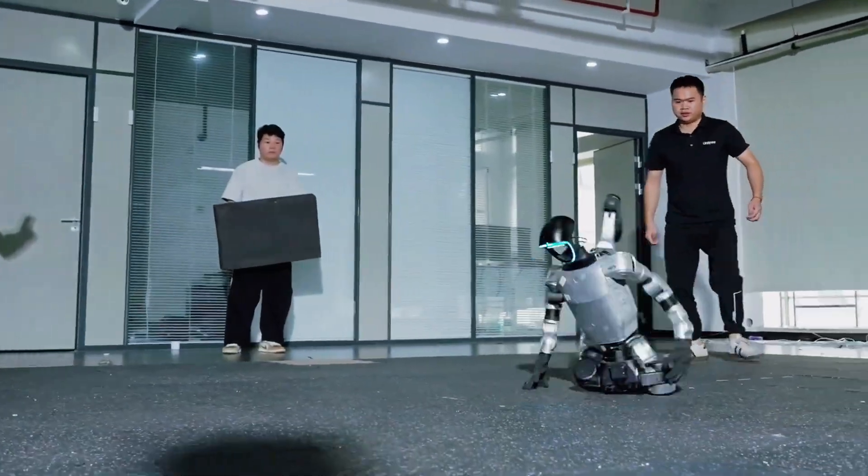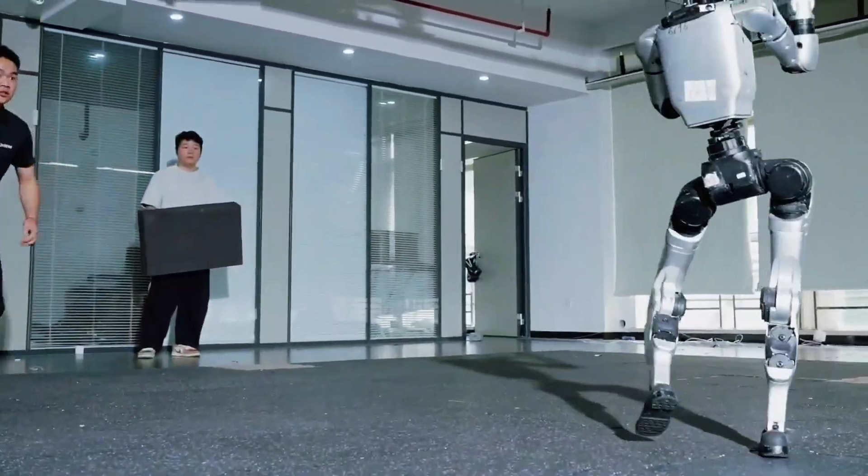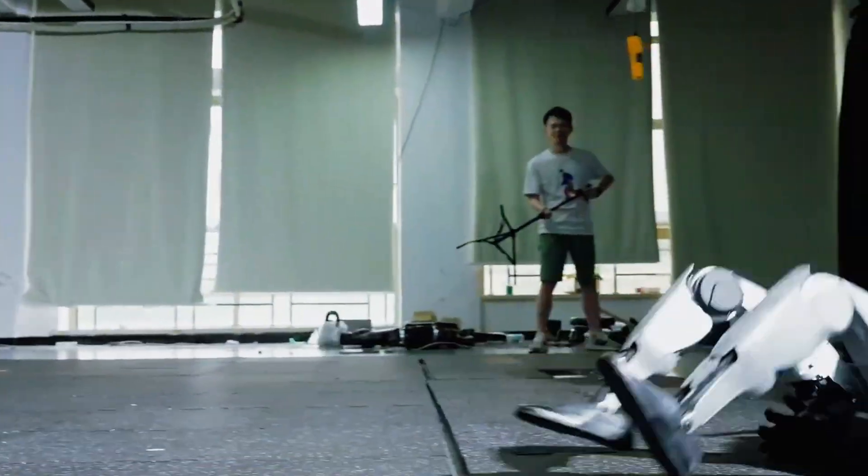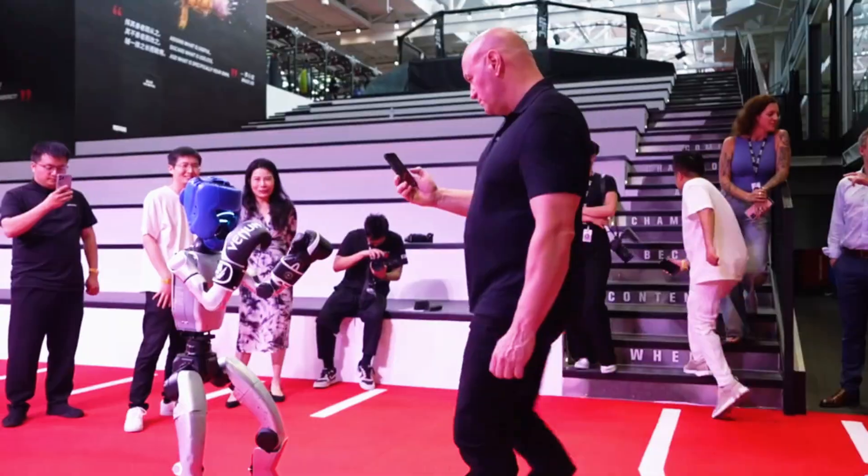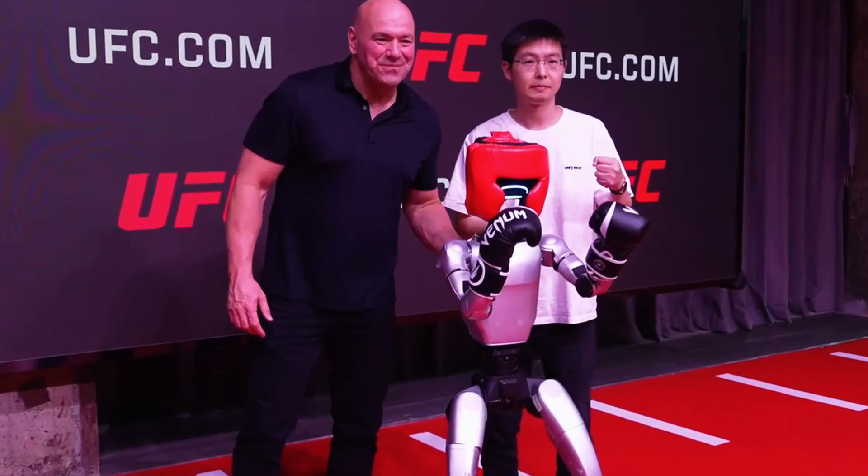Imagine Bruce Lee's moves fused with a robot that refuses to hit the floor. Sounds impossible, right? Well, Unitree's G1 just pulled it off, and what you're about to see looks like it came straight out of a sci-fi martial arts movie.